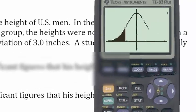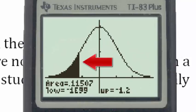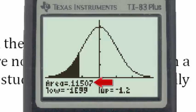Then we hit the enter key, and the TI-83 draws the distribution and gives us the area, which is our answer, as 0.11507.